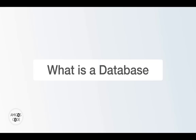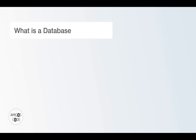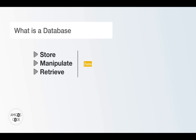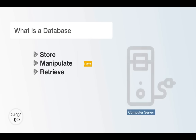Without further ado, let's go ahead and learn this awesome database called Postgres. In this video, let's go ahead and learn what exactly a database is. A database is a place where you can store, manipulate, and retrieve data. Usually this data is stored inside of a computer server. You put data into it, and then you can retrieve, see, manipulate, delete, and update — all of the operations provided by the actual database.